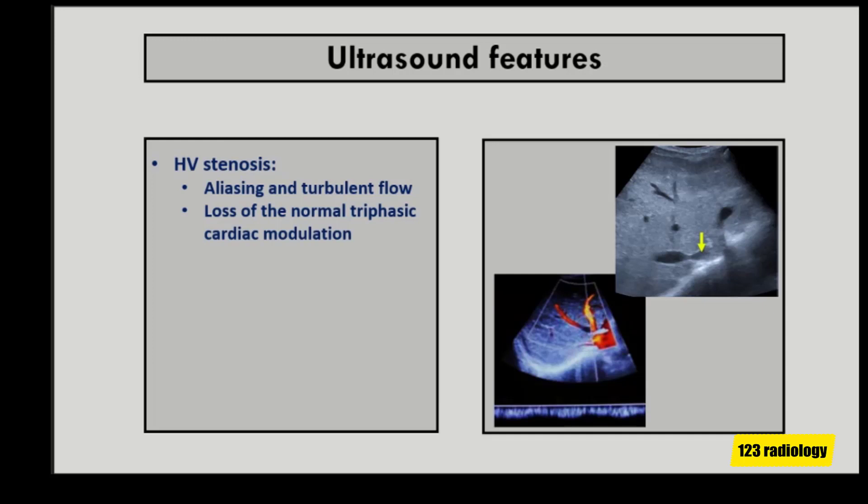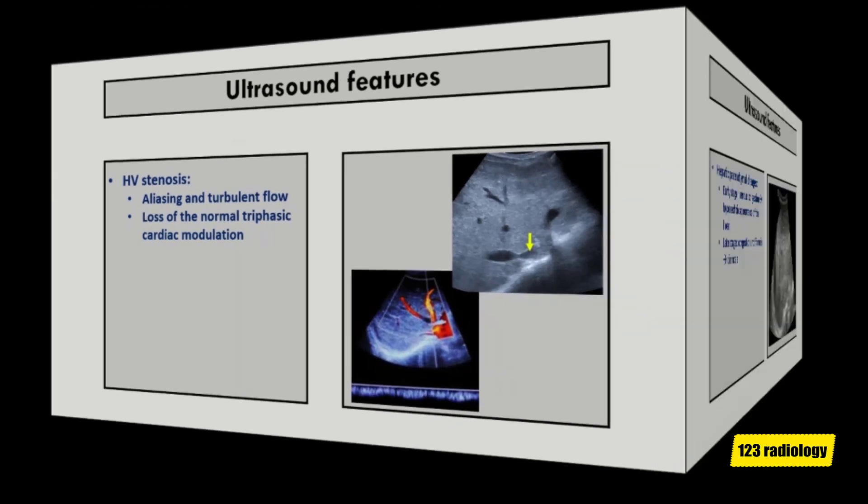On color Doppler ultrasound, stenosis is manifested by aliasing effect and turbulent flow, with loss of the normal triphasic cardiac modulation, as you can see in this image.